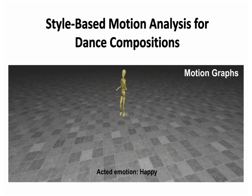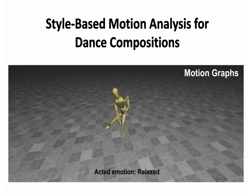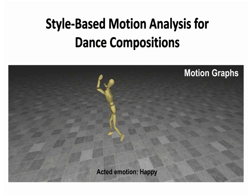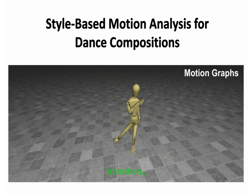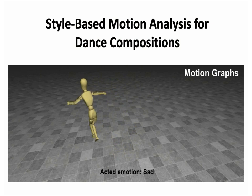Computer animation techniques aimed at synthesizing human motion from existing motion capture data are primarily based on posture analysis. One such method is motion graphs, which compares the posture correlation between motions. However, it does not take into consideration the stylistic variations of movement, resulting in motion with unnatural discontinuities. This work presents a motion analysis and synthesis framework based on Laban movement analysis that respects the stylistic variations and thus is suitable for dance motion synthesis.